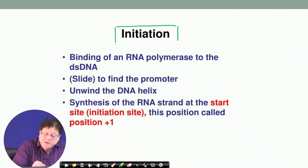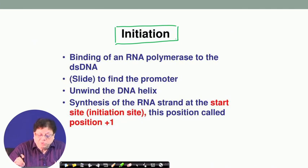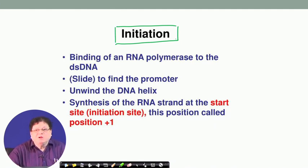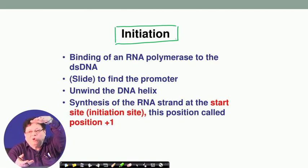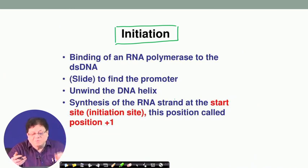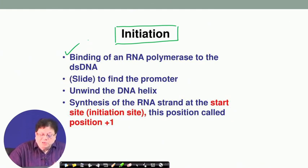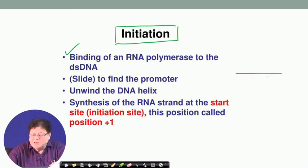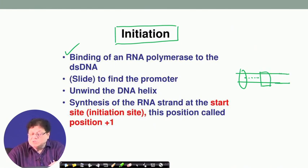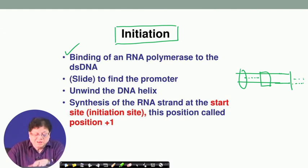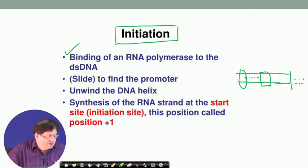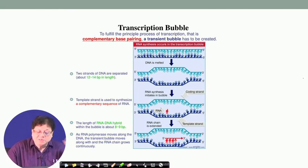The first step is initiation - the RNA polymerase has to bind to the promoter. Once it binds, the DNA double helix has to melt because you have to separate it into the template and non-template strand, and then the template strand is copied and RNA is made. The first step is binding of the RNA polymerase to the double-stranded DNA, then it slides along and finds the promoter region. Once it finds the promoter region, it knows that 10 bases downstream it has to start the synthesis. Find the promoter, unwind the double helix, and then synthesize the RNA strand at the start site - initiation site - which is position plus 1.